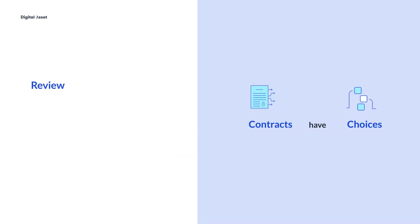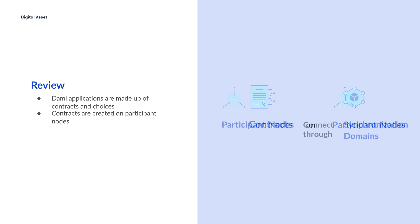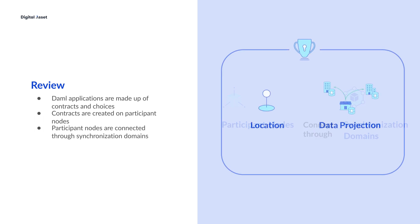So let's review. DAML applications are made up of contracts and choices. These contracts are created on participant nodes that you and other parties in the application manage. The participant nodes are connected through synchronization domains, which ensure the correct data projection and thereby the location where data is sent through the Canton protocol. Data projection and node location allow for data sovereignty for everyone in the network.